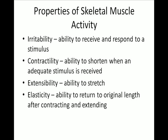Contractility is the ability to shorten when the muscle gets that stimulus. Extensibility is the ability to stretch — so it can not only contract, but it can stretch. And then elasticity is the ability to return to original length. Contractility allows it to shorten and contract, and then elasticity allows it to go back to its original length when the signal's not there.